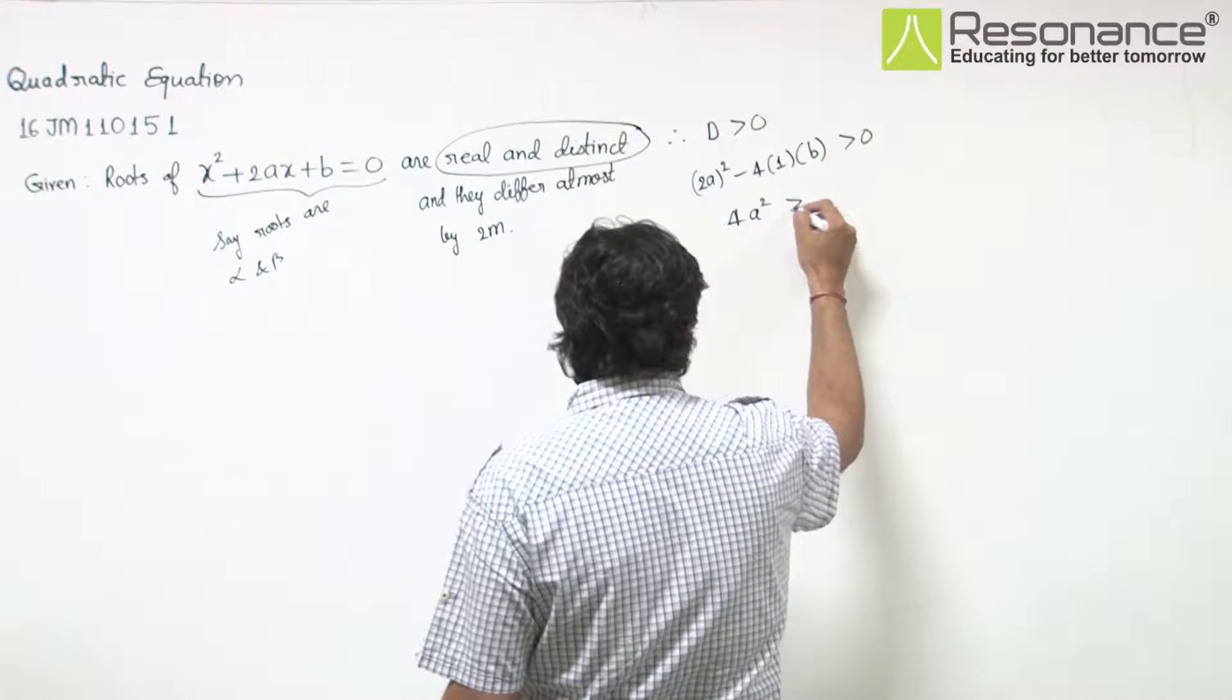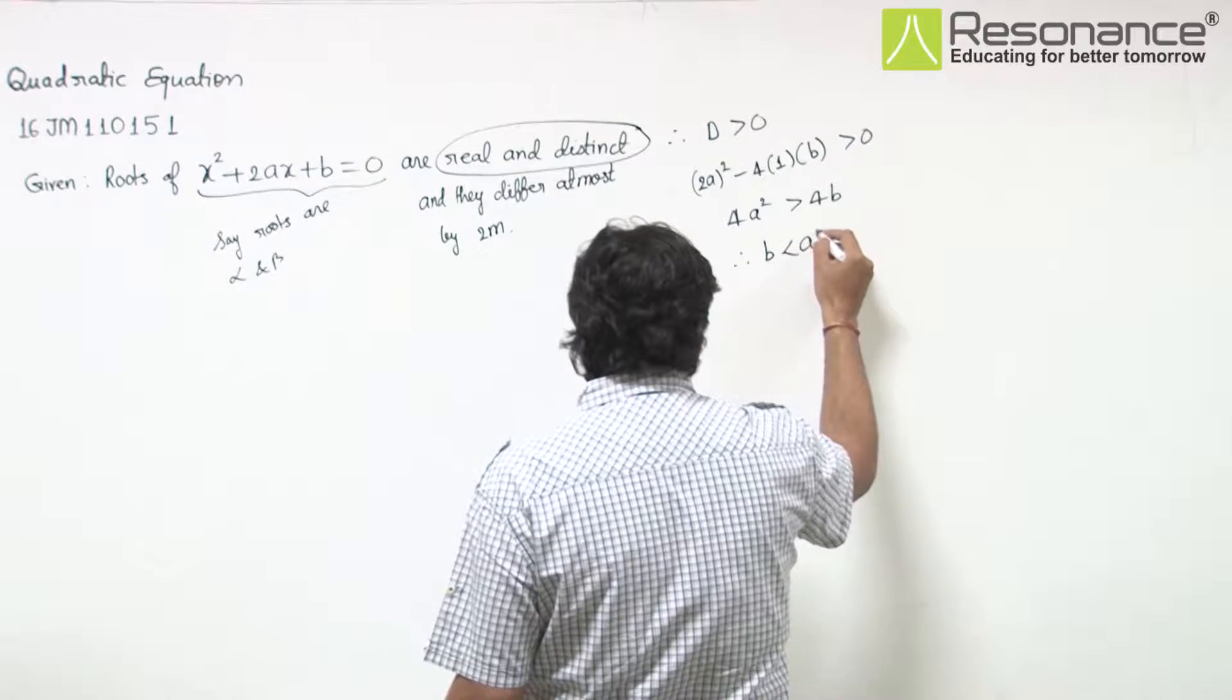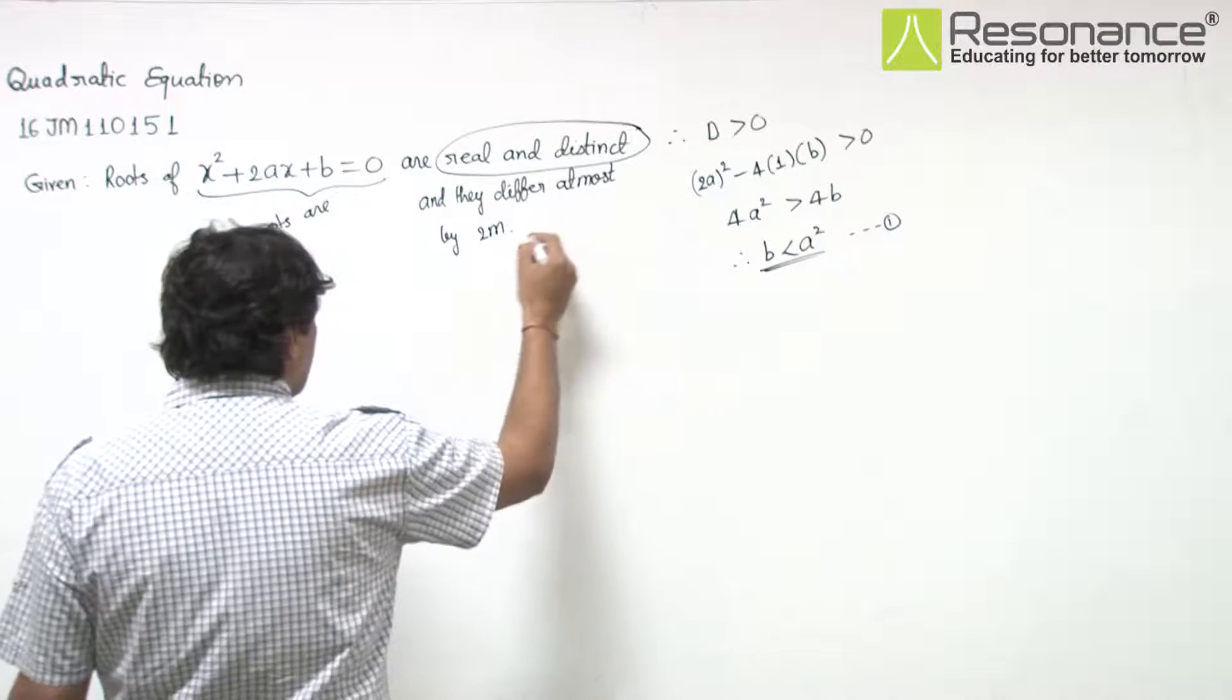This gives 4a² > 4b, that means b < a². And they differ at most by 2m, so we can say that |α - β| ≤ 2m.